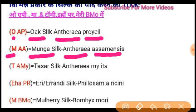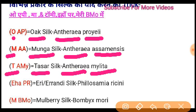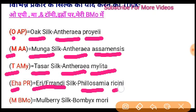Look at Tommy. T from Tusser silk, A from Antheraea, and Y from Mylitta. Tusser silk — Antheraea mylitta. This means E from E, and P — Philosamia ricini. P — Philosamia, R — Ricini. Then P, Philosamia, and R, Ricini.